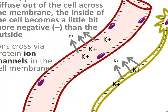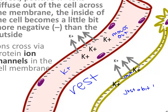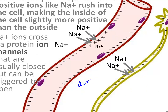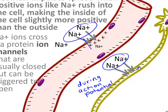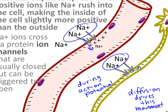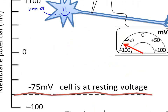At rest, the inside of our neuron is negative because some potassium left. During an action potential, a little sodium rushes in — just enough to make it positive — and the action potential travels far and fast. The potassium leaving at rest and sodium rushing in during an action potential set our membrane voltage either positive or negative.